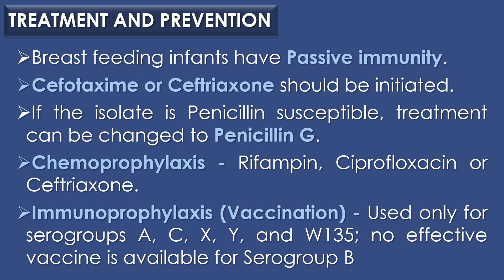Treatment and prevention of Neisseria meningitidis infection: Breastfeeding infants have passive immunity for the first 6 months. Treatment with cefotaxime or ceftriaxone should be initiated. If the isolate is penicillin susceptible, treatment can be changed to penicillin G. Chemoprophylaxis for contact with infected persons is with rifampin, ciprofloxacin, and ceftriaxone. For immunoprophylaxis, vaccination is an adjunct to chemoprophylaxis and is used only for serogroups A, C, S, Y, and W-135. No effective vaccine is available for serogroup B.